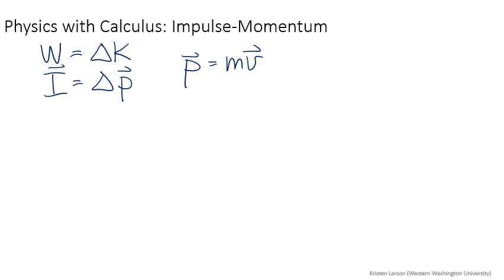Where momentum comes from is actually Newton's laws, the way Newton thought about them. We think about Newton's laws as F equals ma, but what Newton thought about was that the force is the time rate of change of momentum. So if the mass isn't changing, then the time rate of change of velocity is acceleration. The time rate of change of momentum is indeed a force.